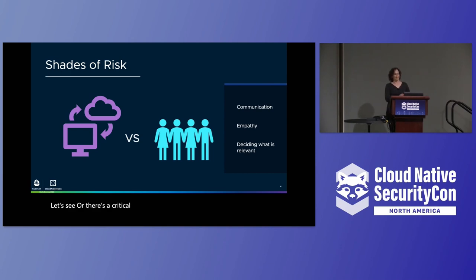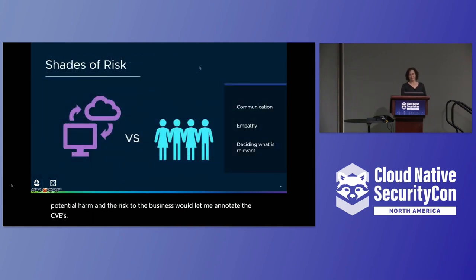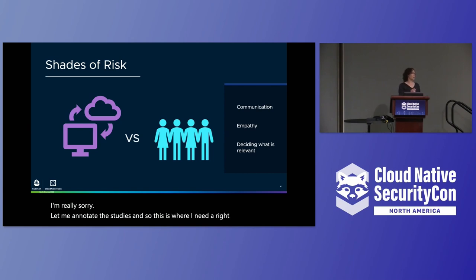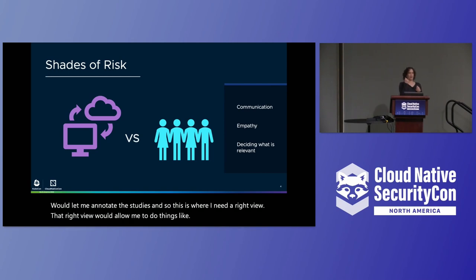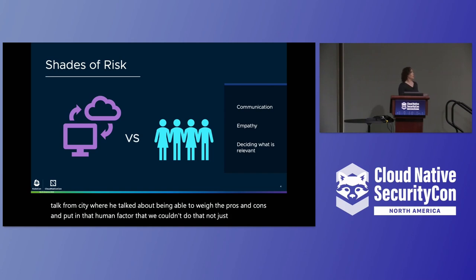Or there's a critical vulnerability in an upstream package and it's overdue — there's no fixed upstream. You could fork it and fix it, but what's the cost to the business to mitigate? A GUI that allows us to weigh the potential harm and the risk to the business would let me annotate the CVEs. This is where I need a right view — that right view would allow me to do shades of risk. John Holland yesterday in his talk from Citi talked about being able to weigh the pros and cons and put in that human factor: not just having a yes or no, but those areas of gray.